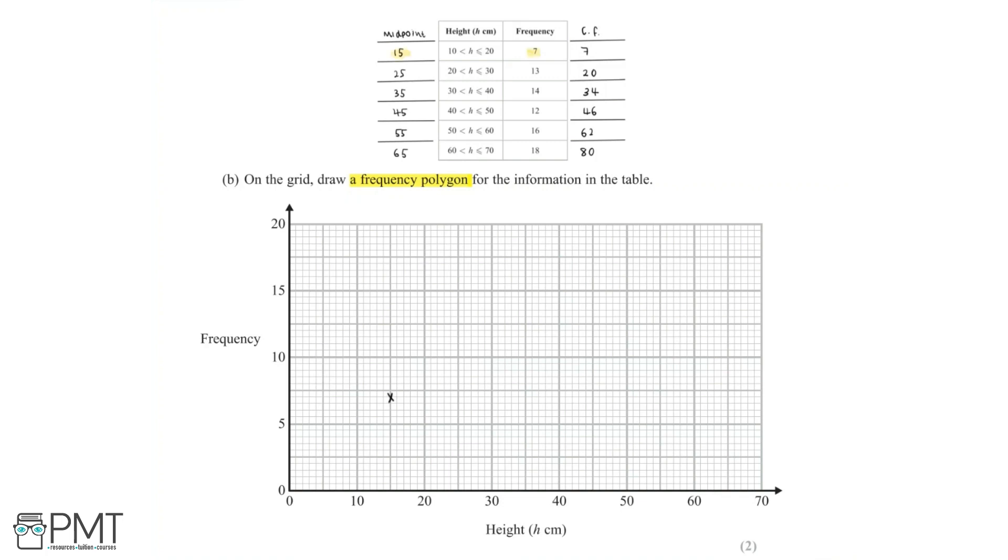Then we want to plot the coordinates 25, 13. Then we want to plot 35, 14. The next point we want to plot is 45, 12. Then we want to plot 55, 16. And finally, we want to plot the point 65, 18.